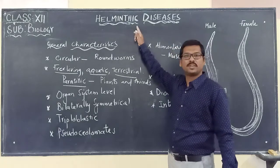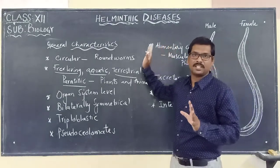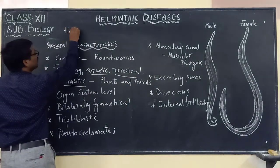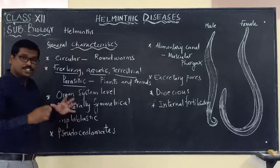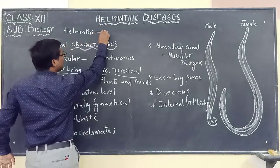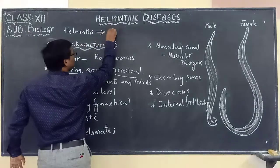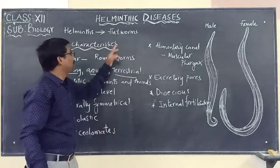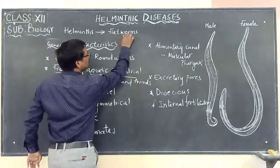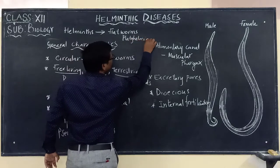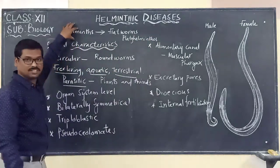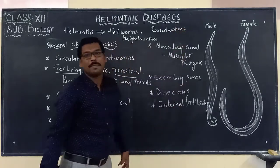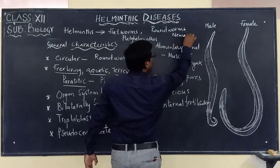In this video we are going to discuss about the Helminthic diseases. These are a group of worms that we commonly call helminths. Helminths can be of two types: one group is called the flatworms, which belong to the phylum Platyhelminthes, and another group is the roundworms, which belong to the phylum Nematoda.